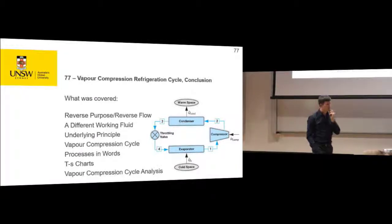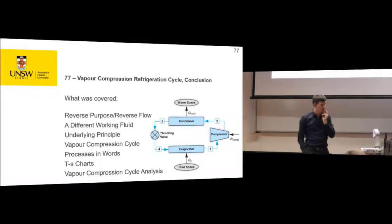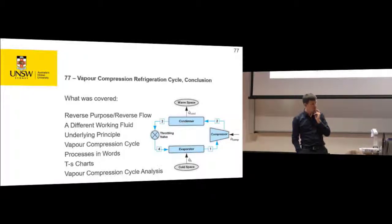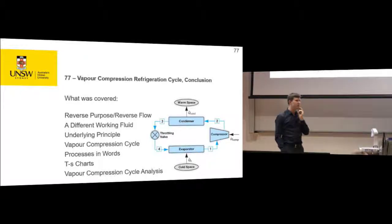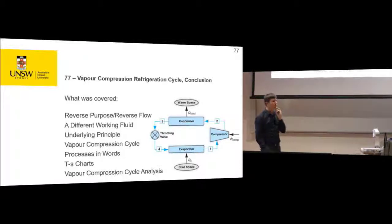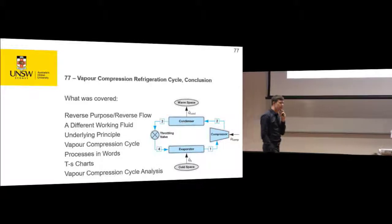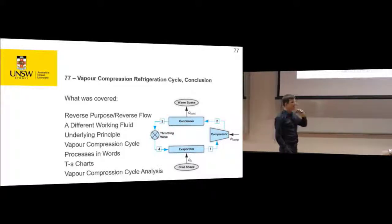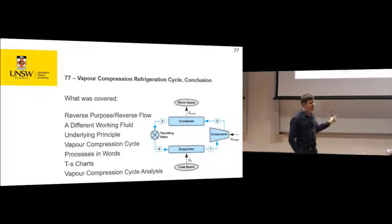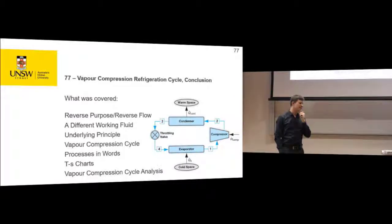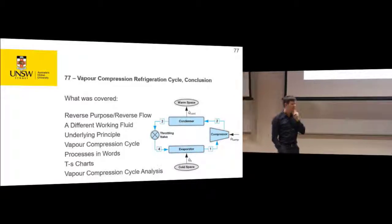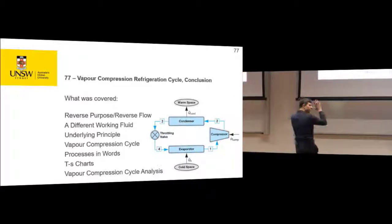Does the refrigerant necessarily need to change phase in refrigeration in general? Could it be a gas the whole way through? In vapor compression refrigeration it does change phase. In the reverse Brayton cycle, it doesn't change phase - it stays as a gas. So for this cycle it changes phase; you can reverse the Brayton cycle and it doesn't.